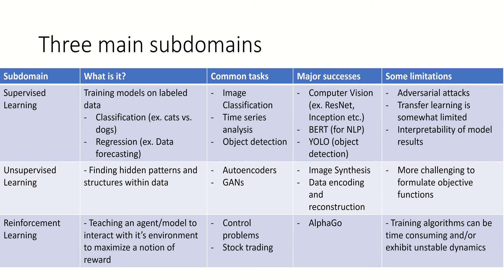In unsupervised learning, the goal is to find hidden patterns and structures within our dataset. In the deep learning space, that's autoencoders and GANs. In traditional machine learning, this is typically done with something like PCA — Principal Component Analysis — or K-means for finding clusters. Autoencoders essentially try to learn a representation of the data in a lower-dimensional setting — compressing the dataset to only the most essential aspects and then reconstructing it. A key area of success was image synthesis, which is what GANs are really famous for — generating very realistic-looking images. A limitation here is that it's challenging to form good objective functions to optimize, and there are many different formulations of GANs with different pros and cons.